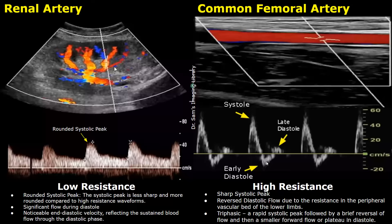There is reverse diastolic flow during early diastole — the waveform is seen below the baseline — and this reversal is another feature of a high resistance waveform. At end diastole, there is zero flow; the waveform is absent. The waveform is triphasic: the first phase is the rapid systolic peak, the second is a brief reversal of flow, and the third is a small forward flow or plateau in late diastole.